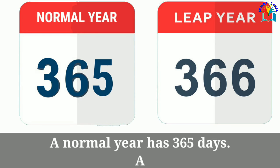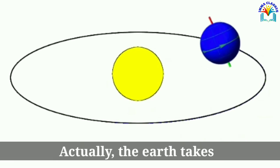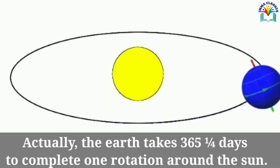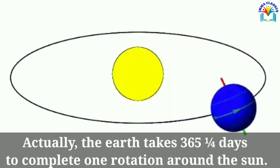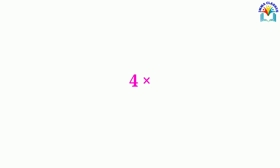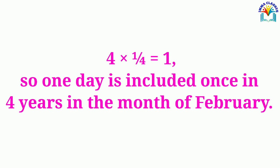A normal year has 365 days. A leap year has 366 days. Actually, the earth takes 365 and a quarter days to complete one rotation around the sun. Four times a quarter make 1. So one day is included once in 4 years in the month of February.